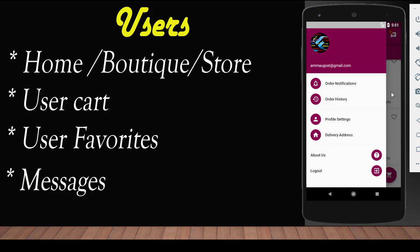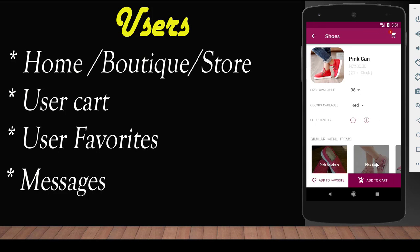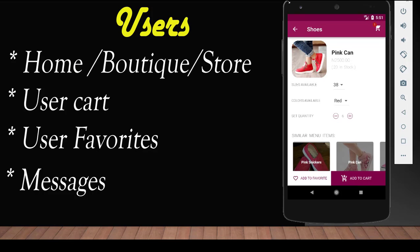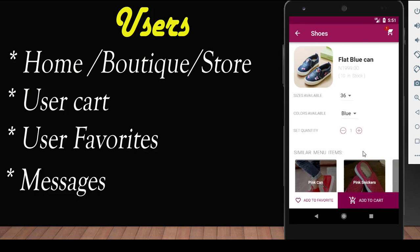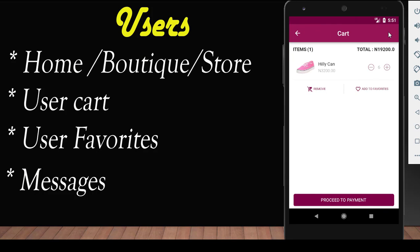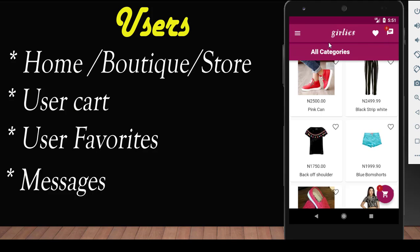This is basically what the app has in the user section — it could have many other features, but these are just the basics. You could click on an item and see the item name, item category, quantity, sizes available, colors available, and you could increase quantity and add to cart. You could see the number of items in stock, select from different boutique menu items, similar products, and directly navigate to your cart from there. It's just made easy.